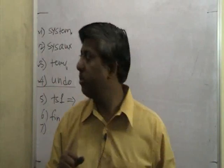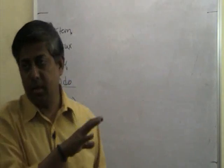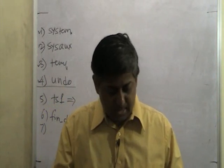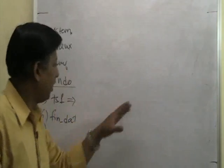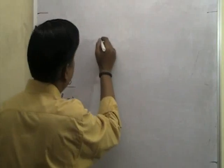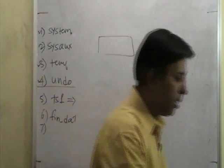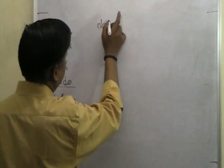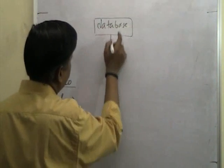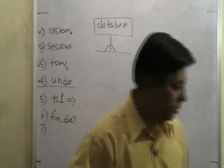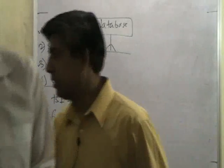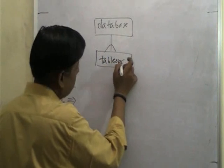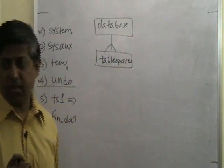On the same node of tablespaces, there is a diagram in your book which is a very commonly used diagram, also in all the Oracle documentation. I'm going to draw that diagram here. This is a database - a database is made up of tablespaces.